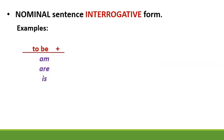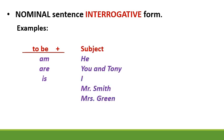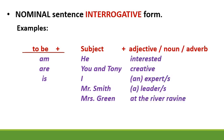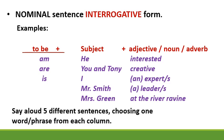To be — am, are, is — goes at the beginning of the question. The subject goes in the middle: he, you, and Tony, I, Mr. Smith, Mrs. Green. Adjective, noun, adverb — let's have some different ones: interested, creative, an expert, a leader, at the river ravine. Say aloud five different sentences, choosing one word or phrase from each column. For example: Am I creative? Your turn — you have one minute.